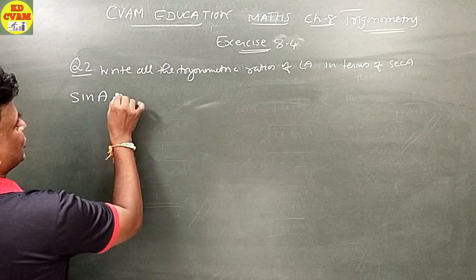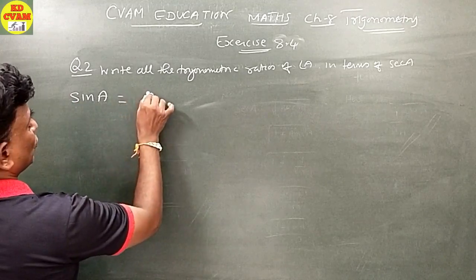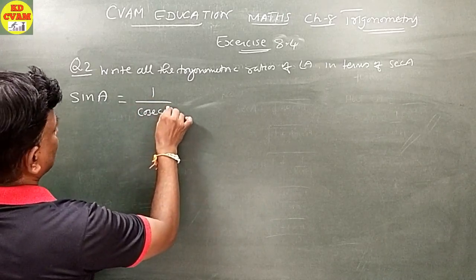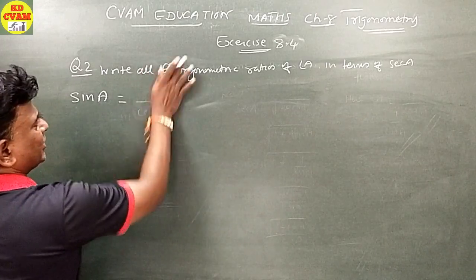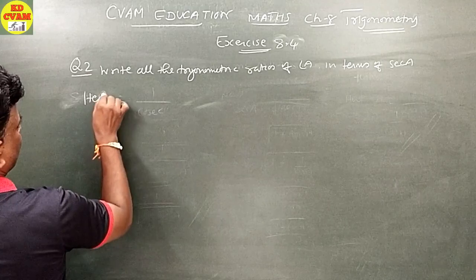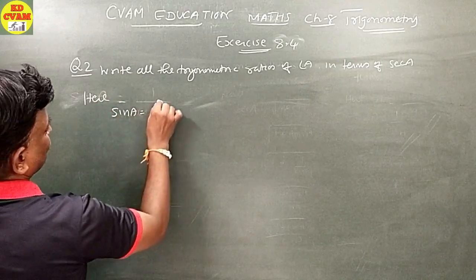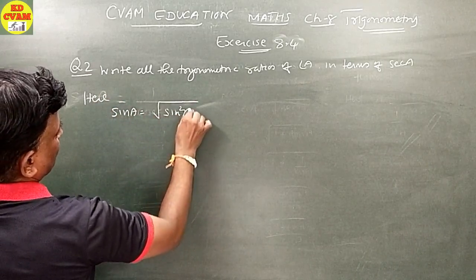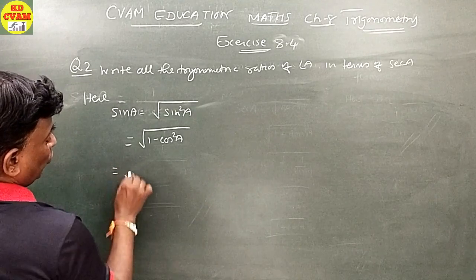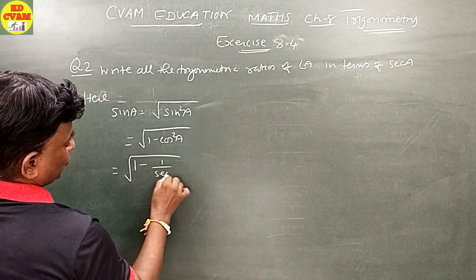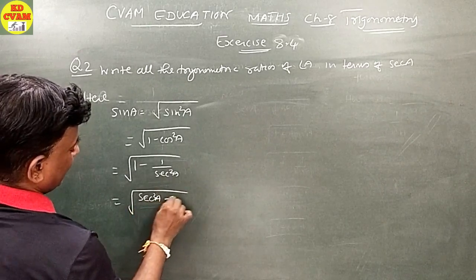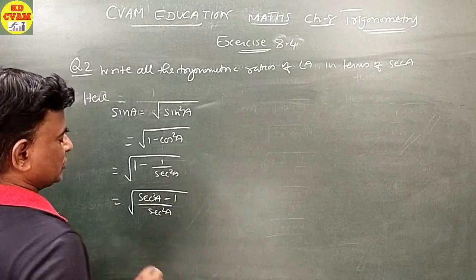Sin A: sin A equals square root of sin squared A. Sin squared A equals one minus cos squared A. One minus cos squared A equals one minus one upon sec squared A. That gives sec squared A minus 1 upon sec squared A. So sin A equals square root of sec squared A minus 1, all over sec A.